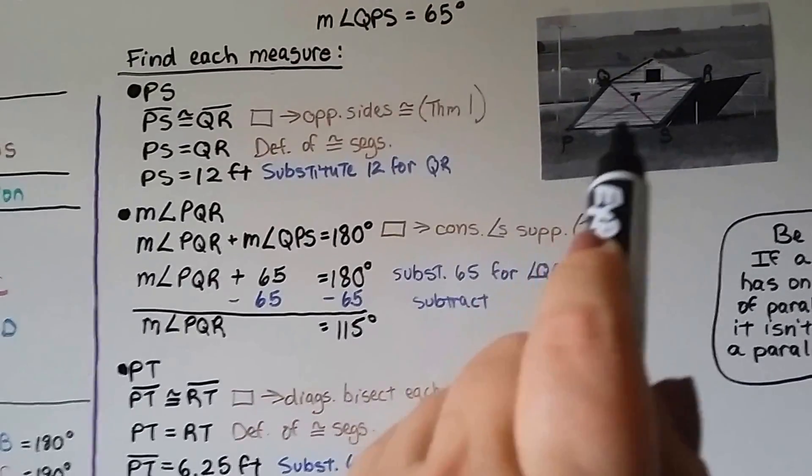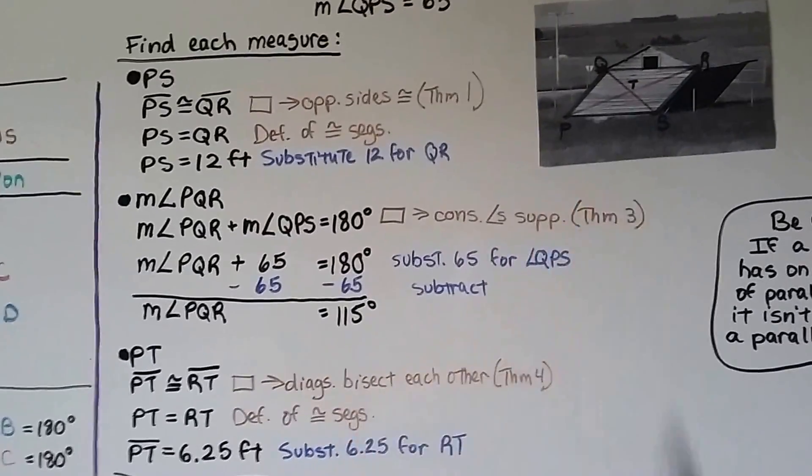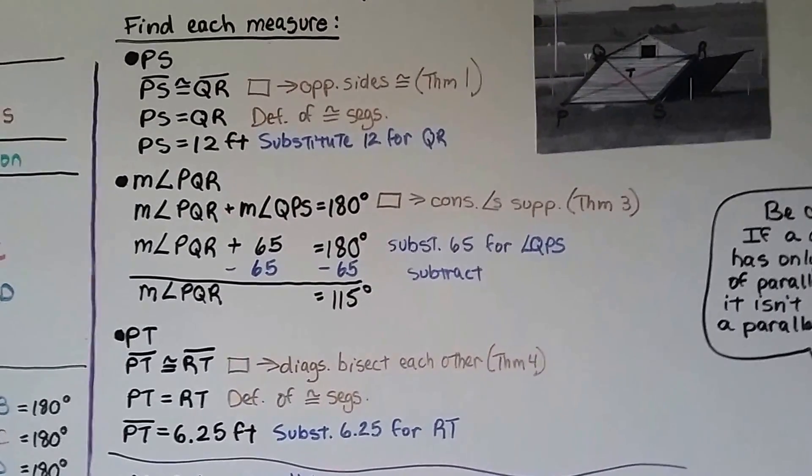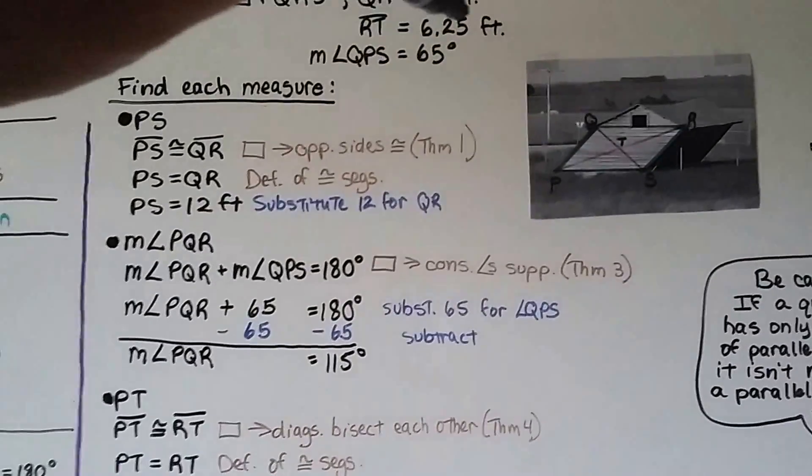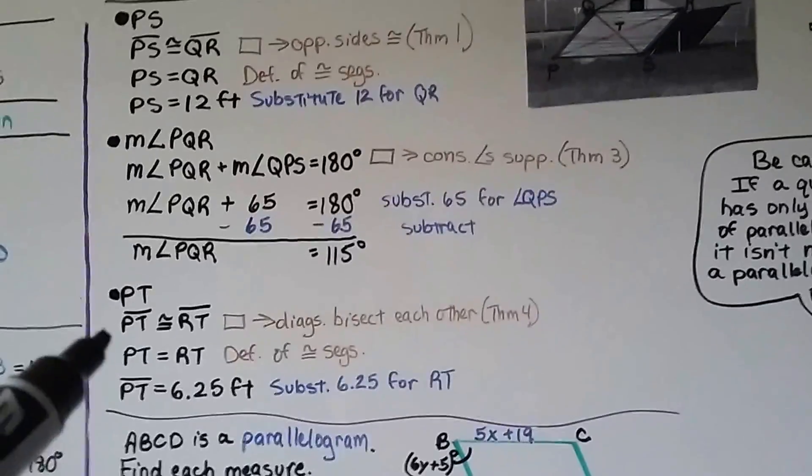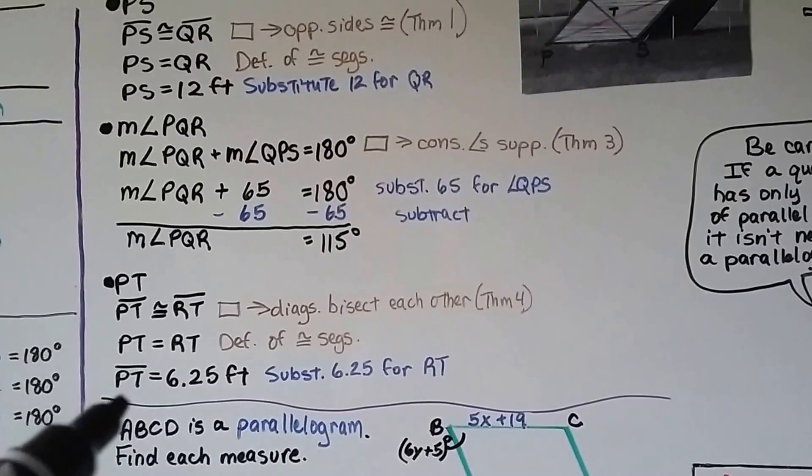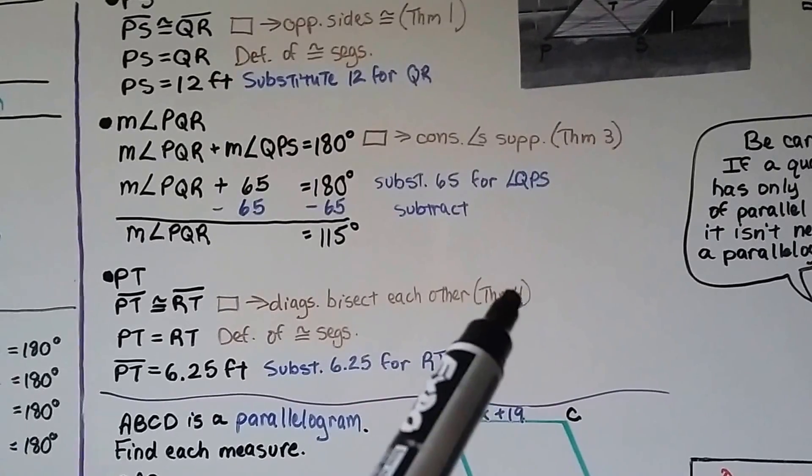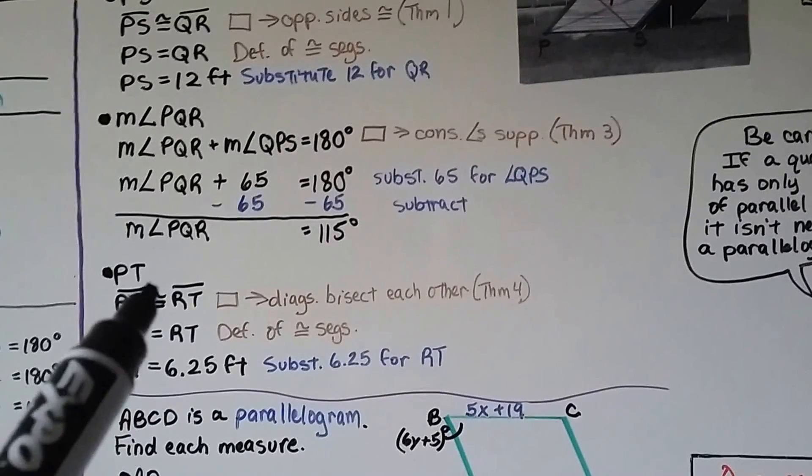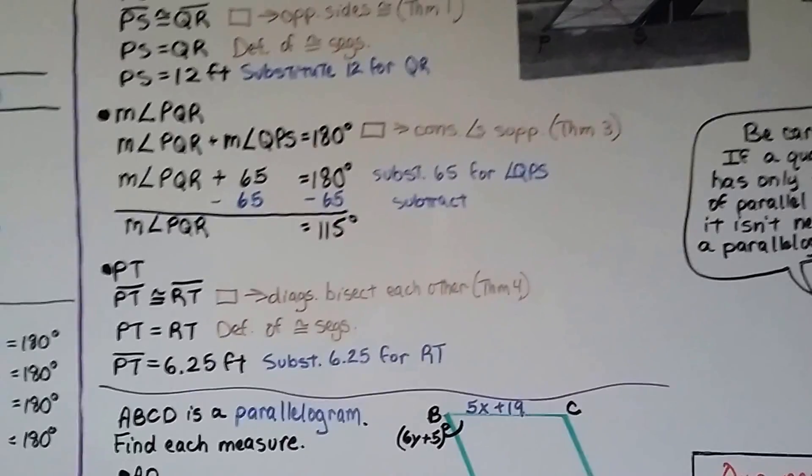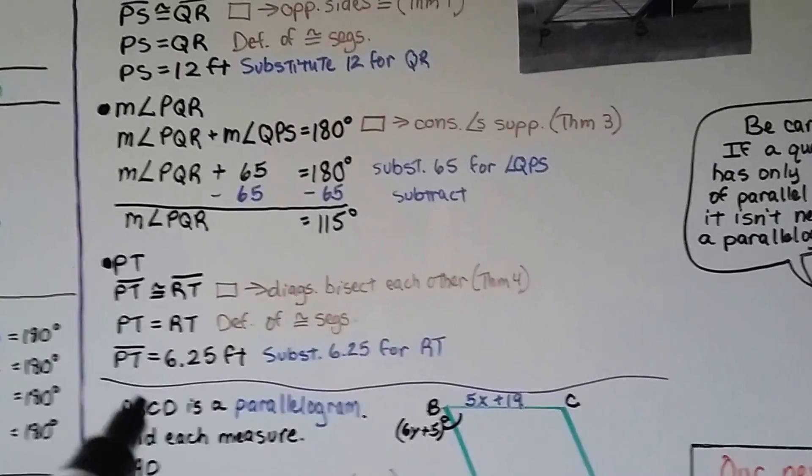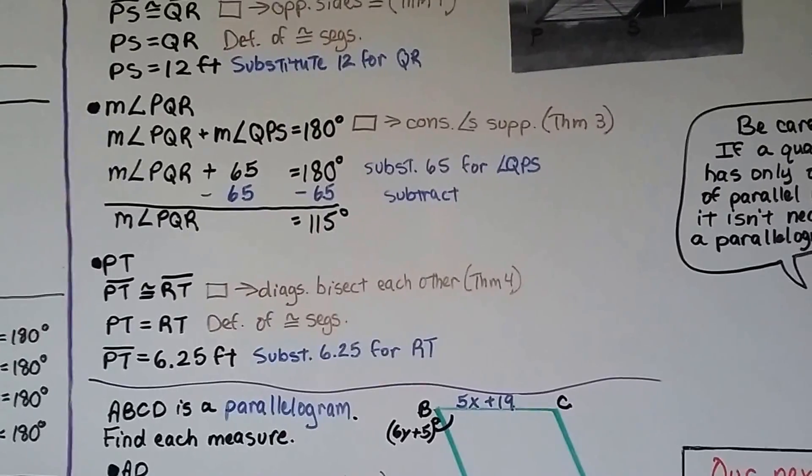We can find PT from this point to the center. We know that RT is 6.25. And segment PT is congruent to RT from our fourth theorem. And so that means they're equal, definition of congruent segments. So that means segment PT is 6.25 feet.